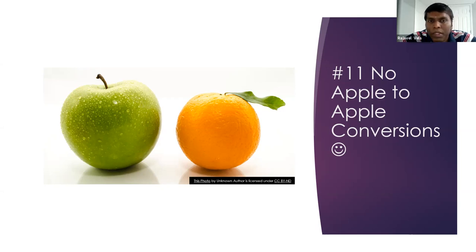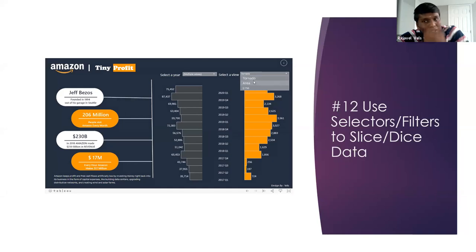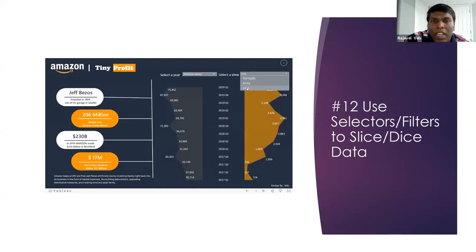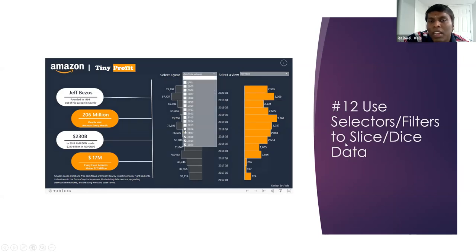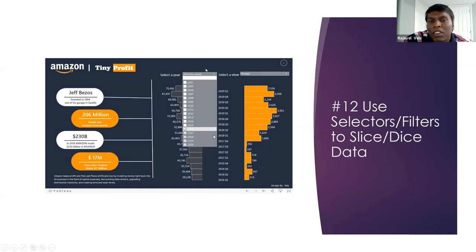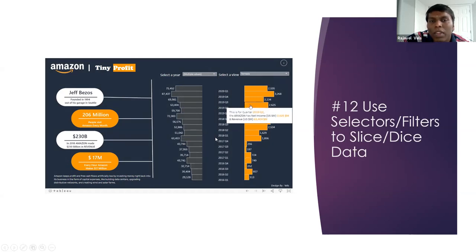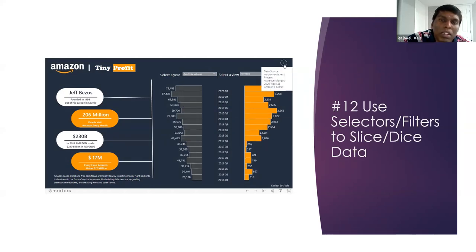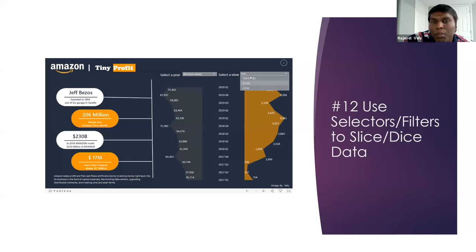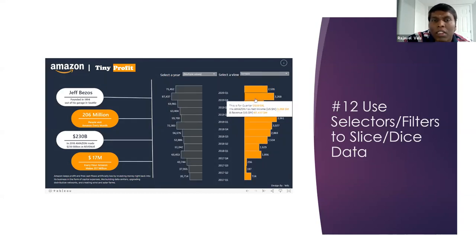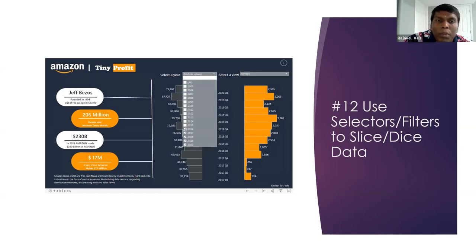Use selectors wherever possible. I've used selectors to switch between line chart, area chart, or bar chart, helping users slice and dice the data. I also have a year selector so users can see trends based on selected values — for example, Amazon profit trends from a Makeover Monday dataset. Selectors help users look at data from different perspectives without overloading the dashboard.